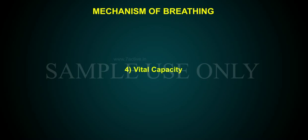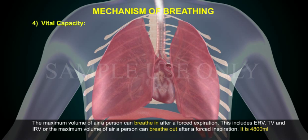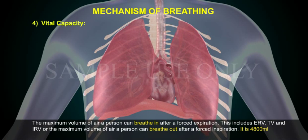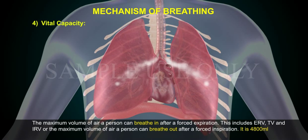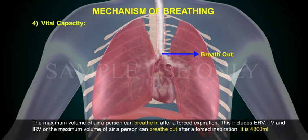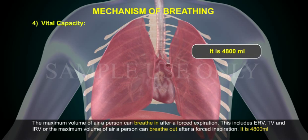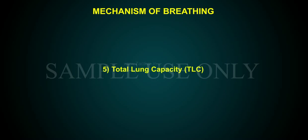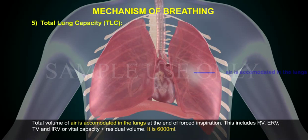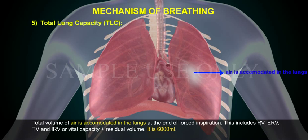4. Vital capacity: The maximum volume of air a person can breathe in after a forced expiration. This includes ERV, TV, and IRV — or the maximum volume of air a person can breathe out after a forced expiration. 5. Total lung capacity: Total volume of air accommodated in the lungs at the end of forced expiration. This includes RV, ERV, TV, and IRV — vital capacity plus residual volume. It is approximately 6,000 ml.